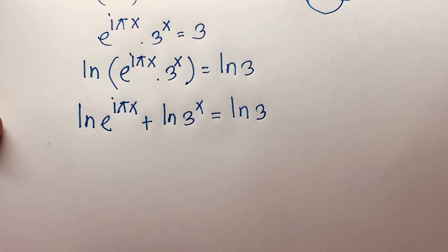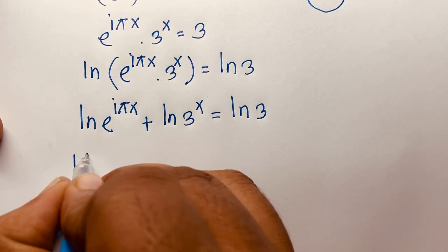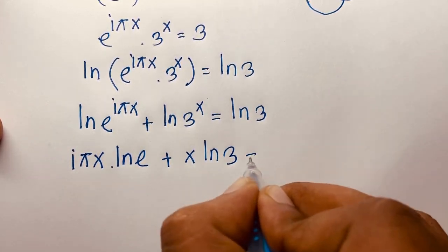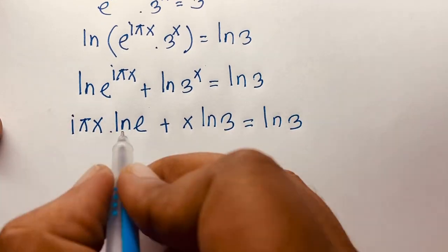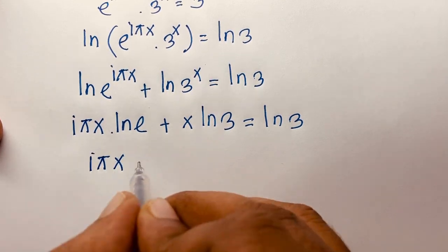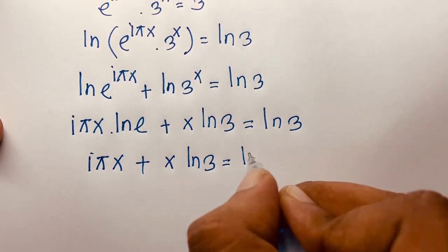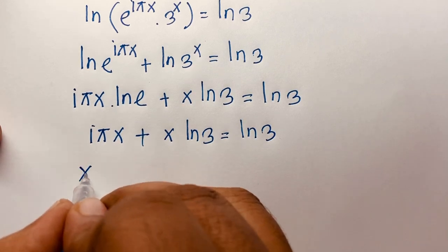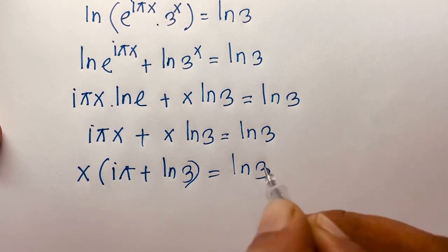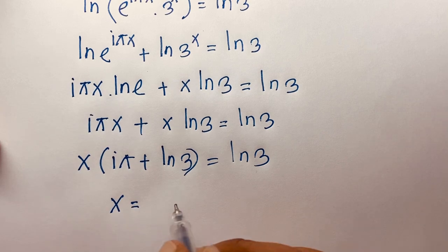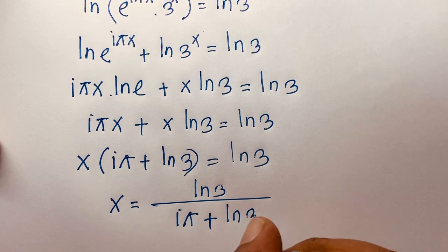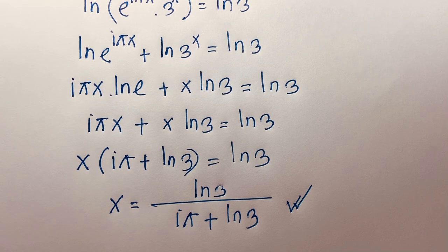According to natural log rules, the exponents move to the front: iπx · ln e plus x · ln 3 is equal to ln 3. Since ln e equals 1, this simplifies to iπx plus x ln 3 is equal to ln 3. Now x is common, so factoring out: x times (iπ plus ln 3) equals ln 3. Therefore x is equal to ln 3 divided by (iπ plus ln 3). This is our final answer for this Math Olympiad question.